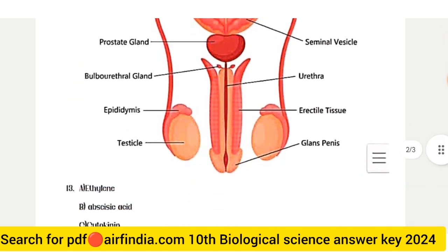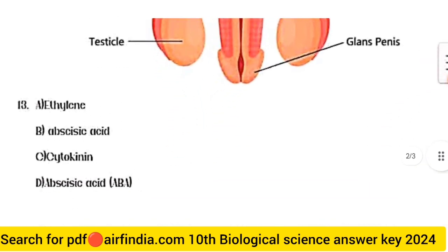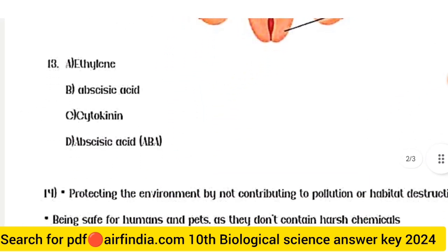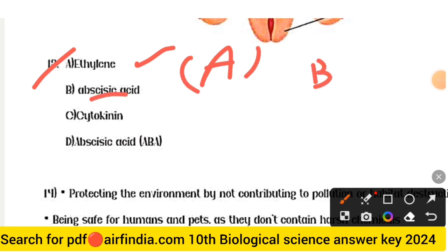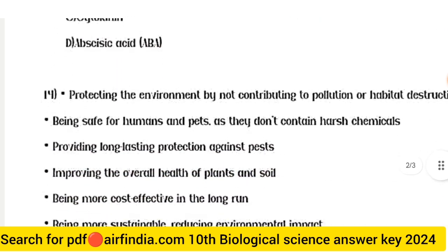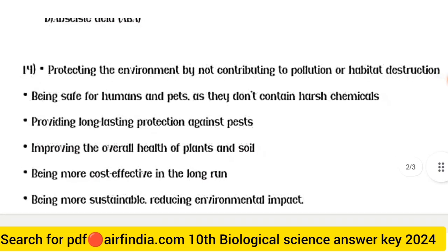Question 13 answer: A is ethylene, B is abscisic acid (ABA), C is cytokinin, and D is abscisic acid (ABA). Full form: ABA is abscisic acid.